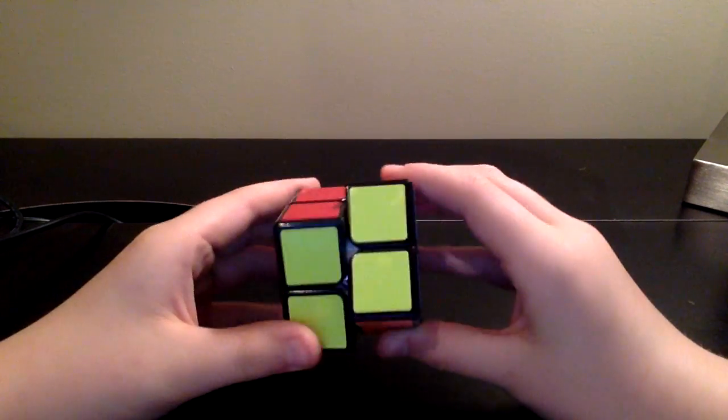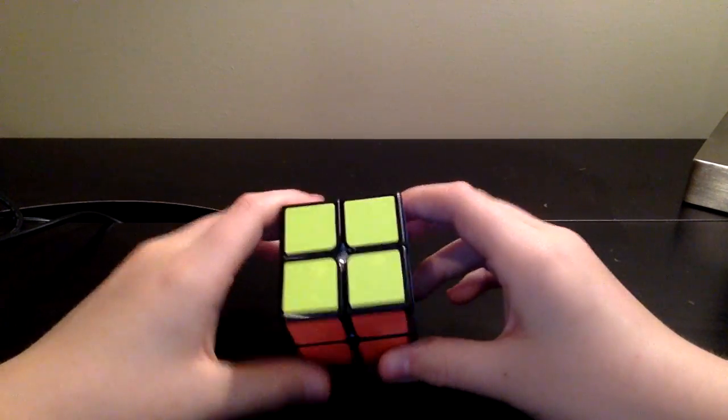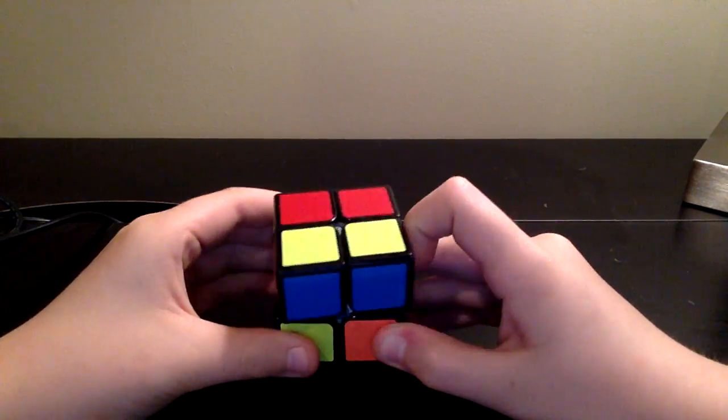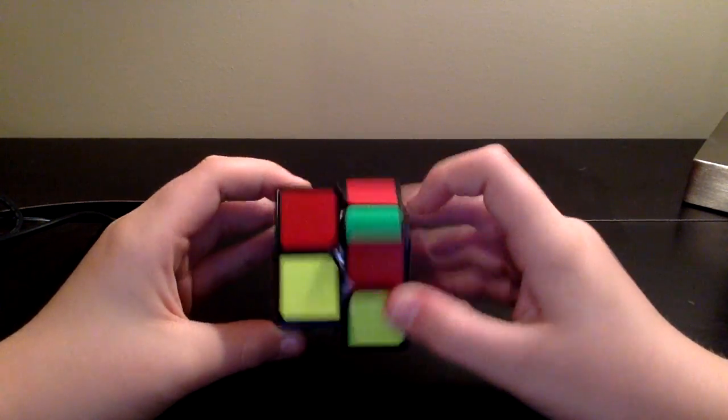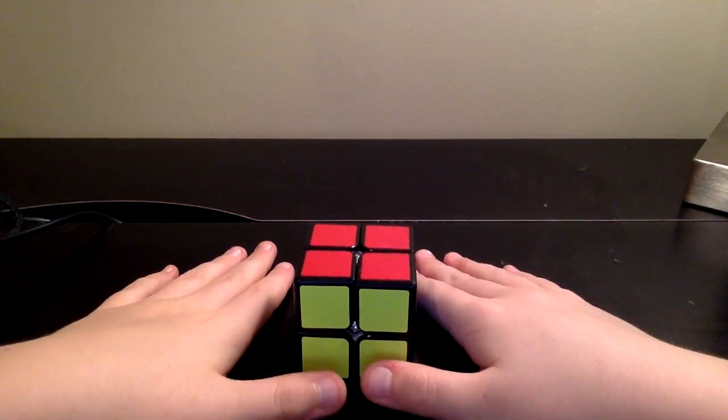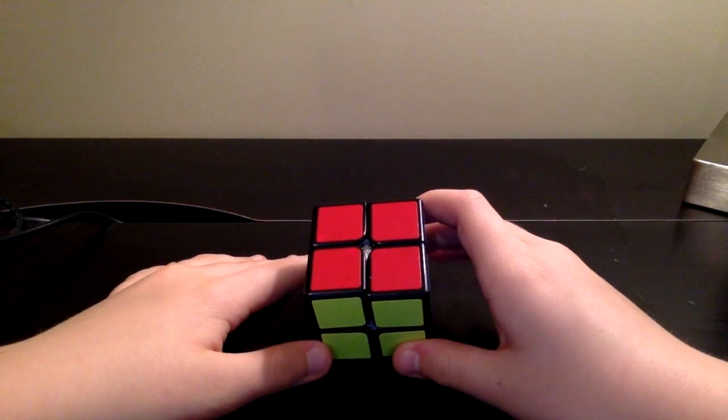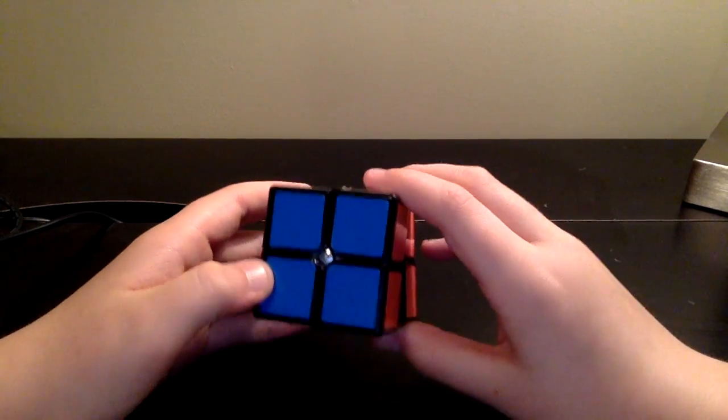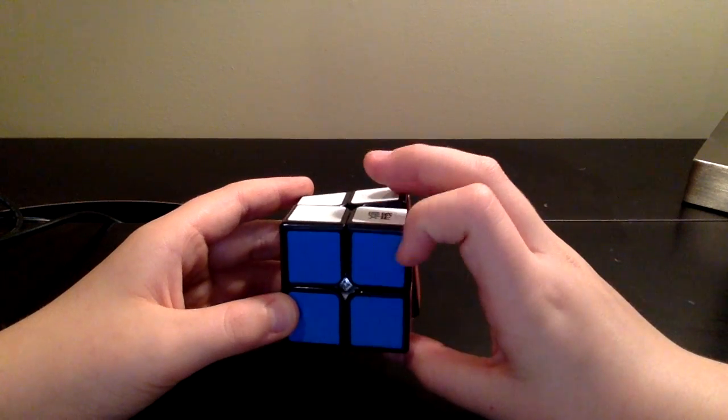Hey guys, Cuber's Corner Hots here and I'm here with a tutorial on how to solve the 2x2, layer by layer, beginners. I use an advanced layer by layer method, there is Ortega of course, some other methods if I'm not mistaken, but you know what, let's jump right into it with the first layer.